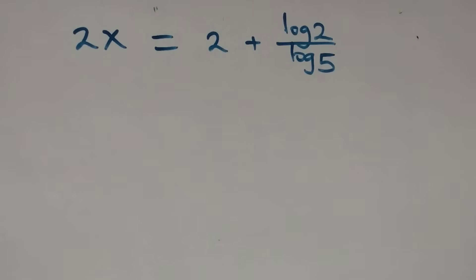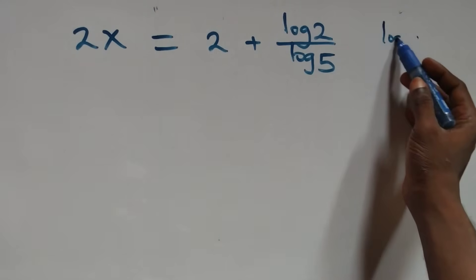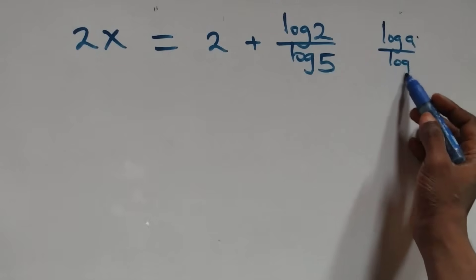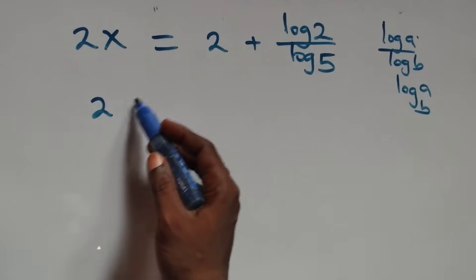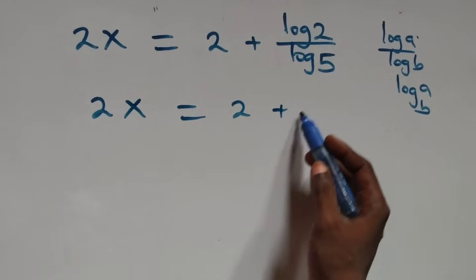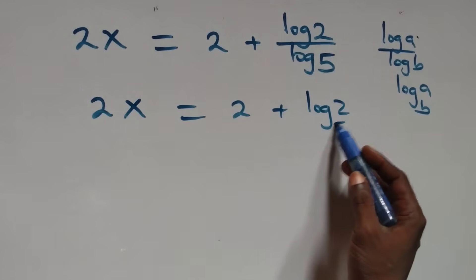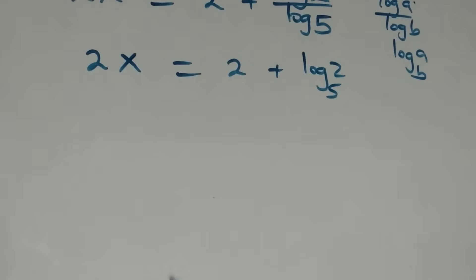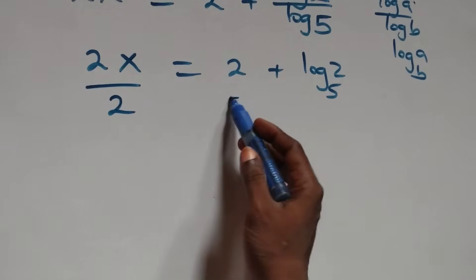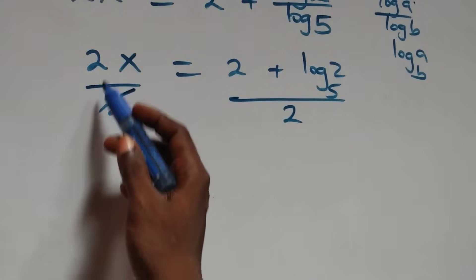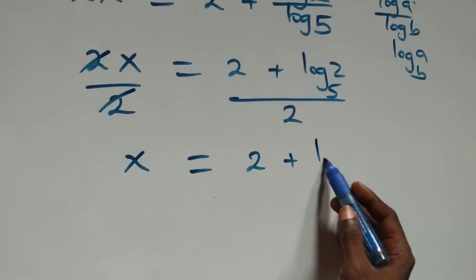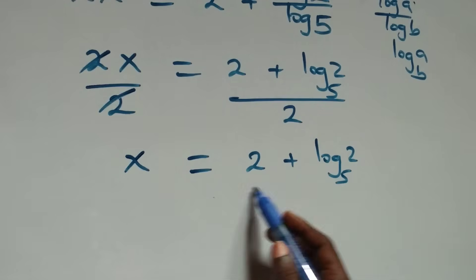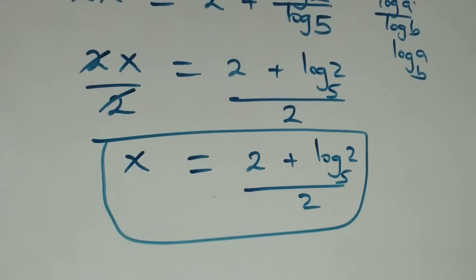From here we apply the change of base rule. When we have log a over log b, it is the same thing as log a to base b. So we have 2x equals to 2 plus log 2 to base 5. Then, we divide both sides by 2, and 2 cancels each other. We have x equals to 2 plus log₅2, all over 2. That is, the value of x is (2 + log₅2) / 2.